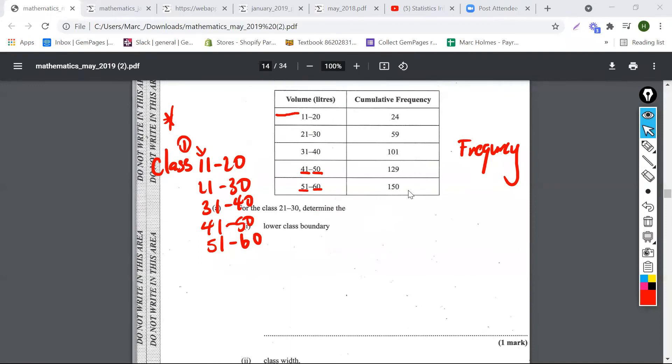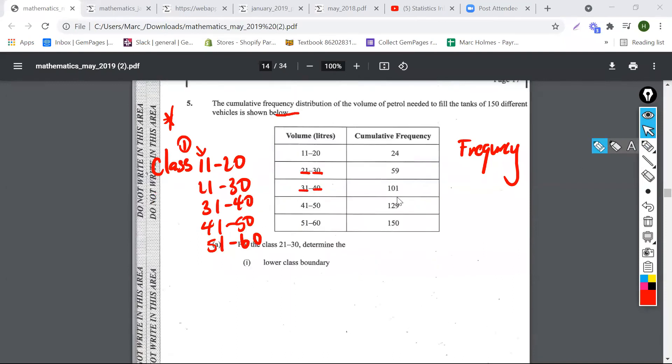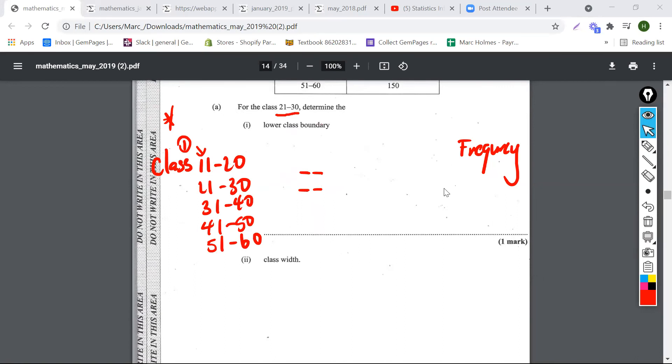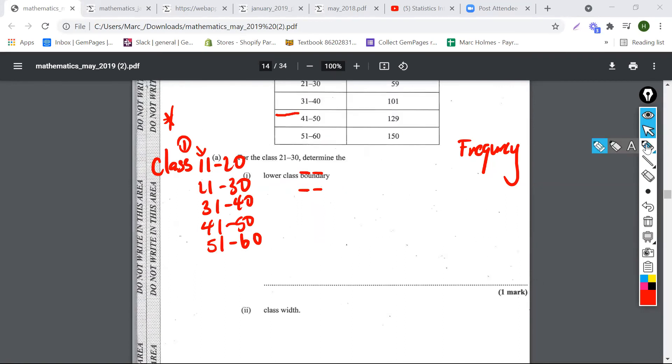Same thing. How do we calculate the class width? It's kind of simple. We can calculate the class width by subtracting any class before it from the one in front of it, meaning the lower limit from the other lower limit. So to find the class width, all we have to do is subtract.